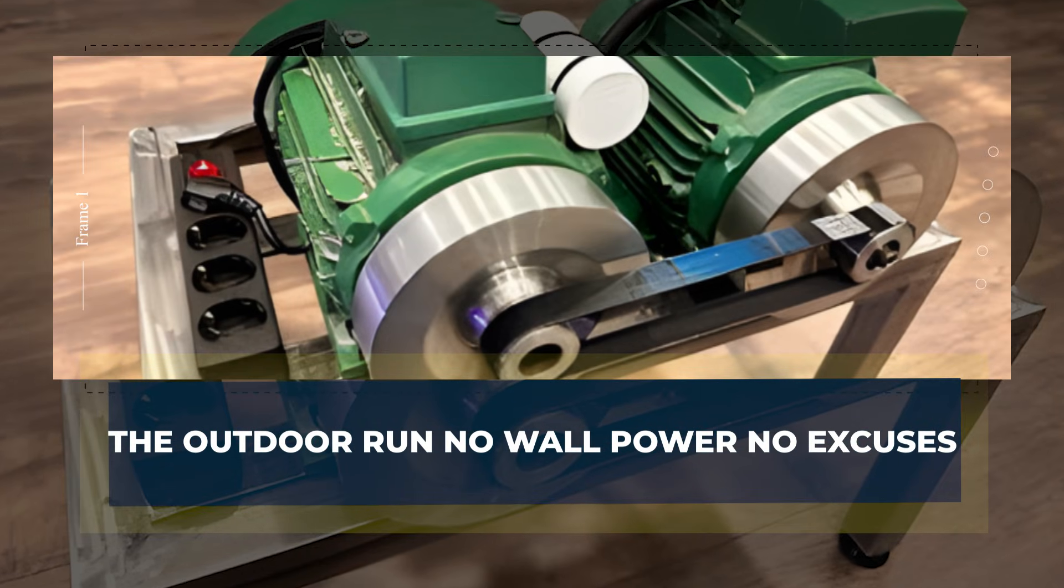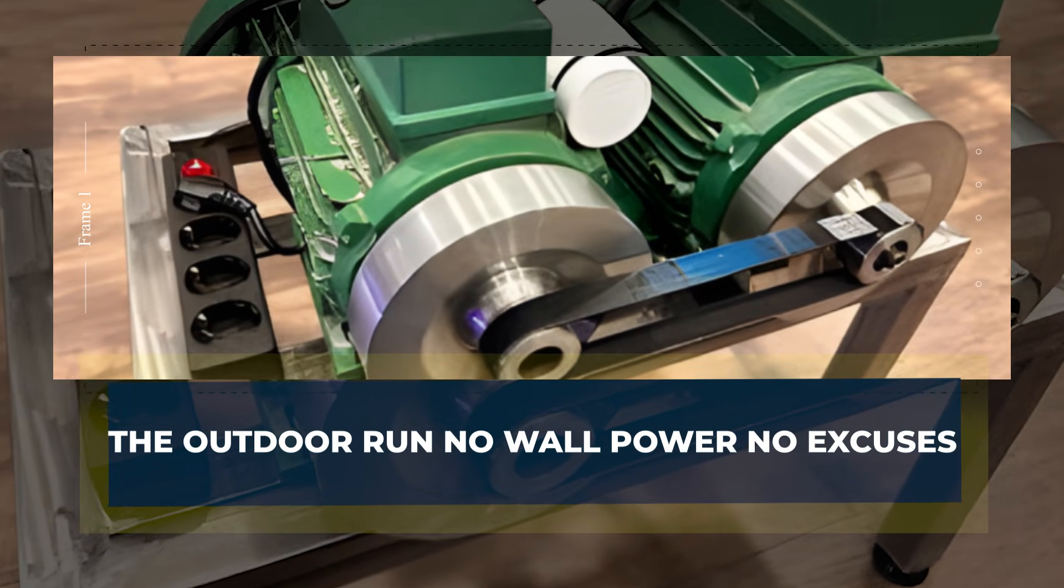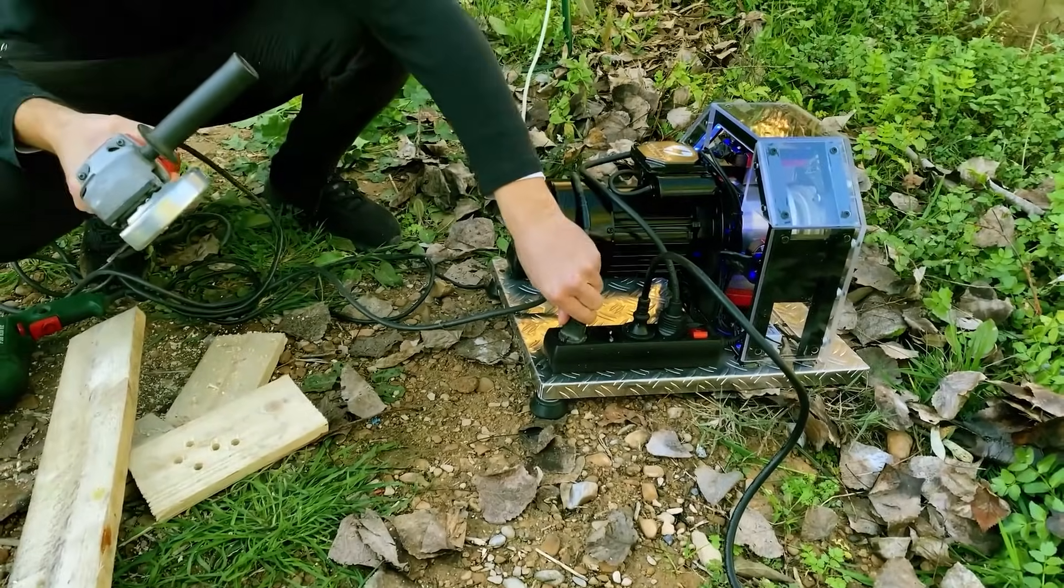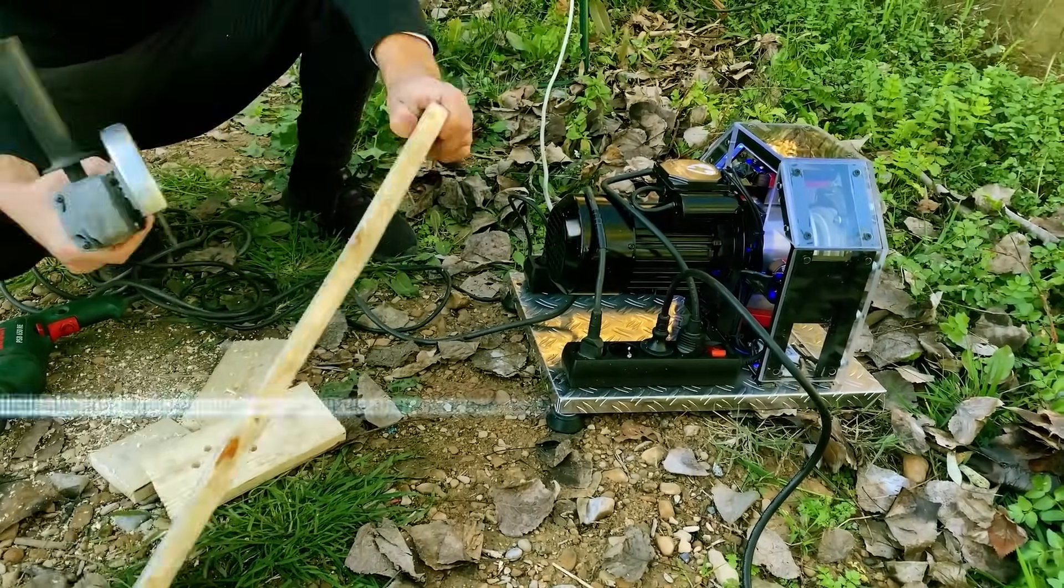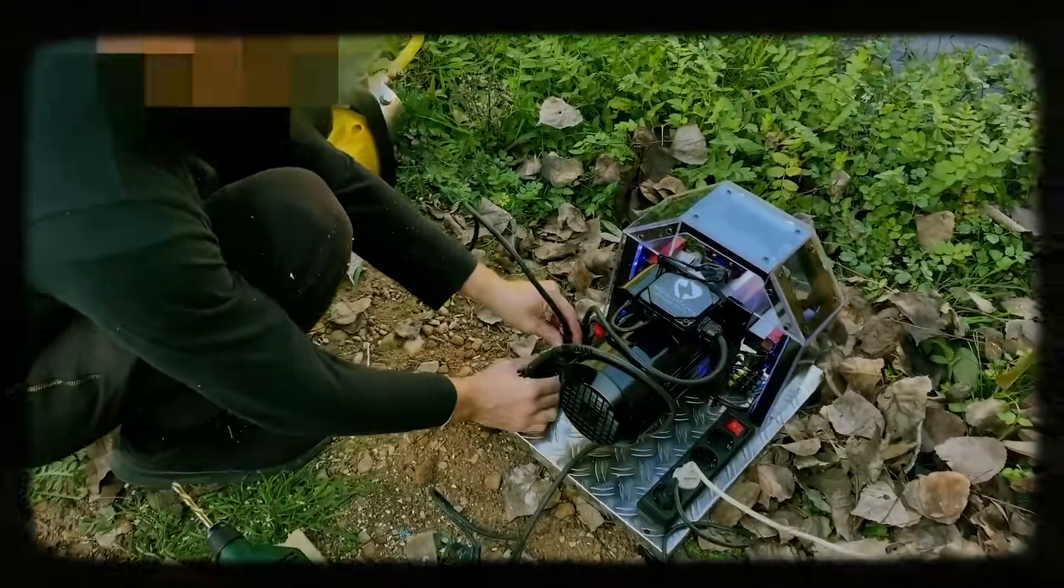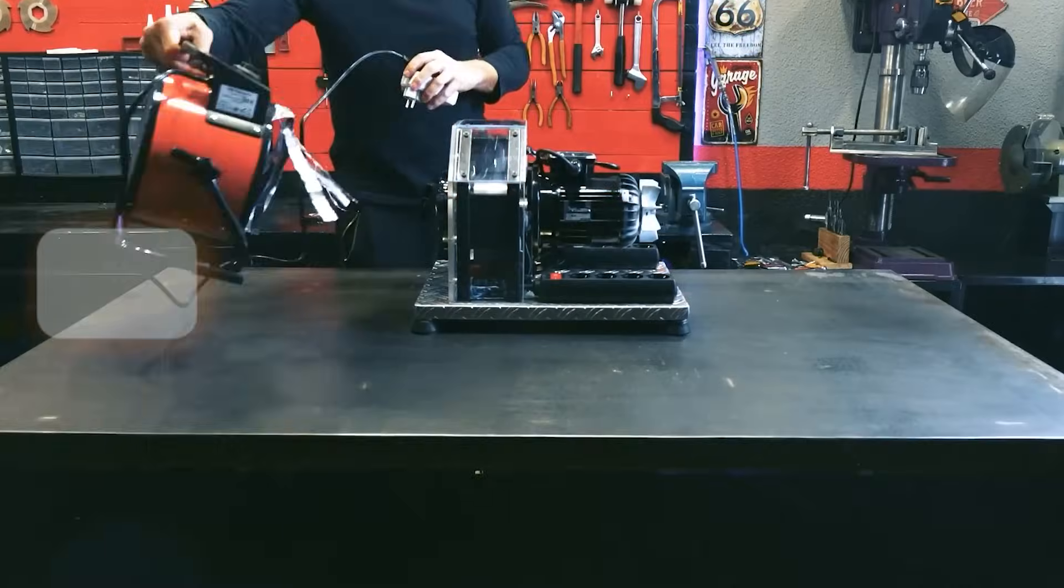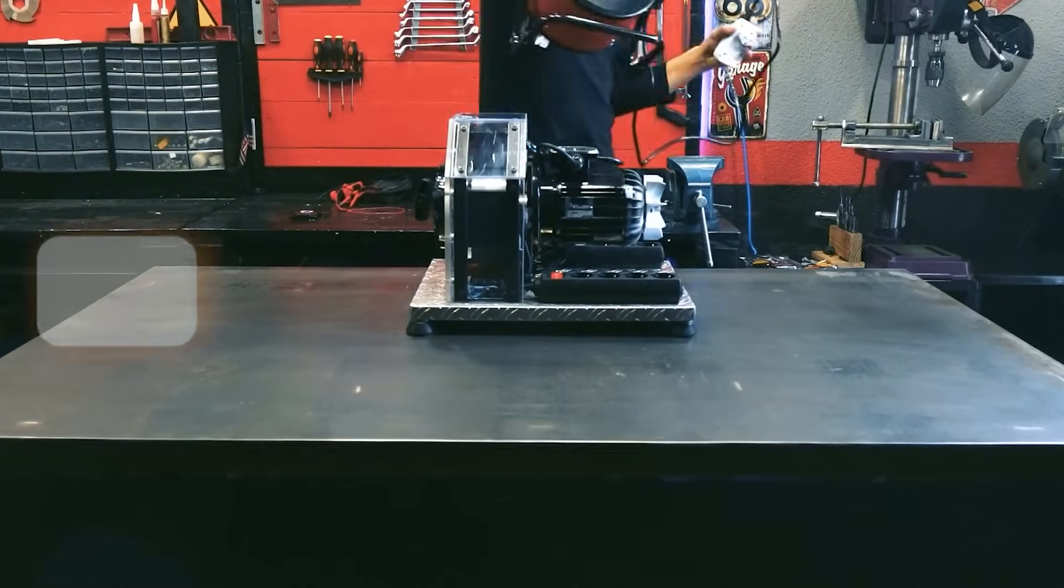The outdoor run. No wall power, no excuses. We drive out to a rural area where there are no outlets to blame and no grid connection to hide behind. The whole point is to remove the easiest cheating paths. We set the unit on a surface and keep the camera rolling.